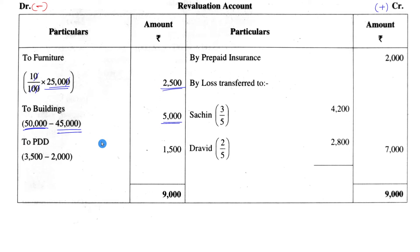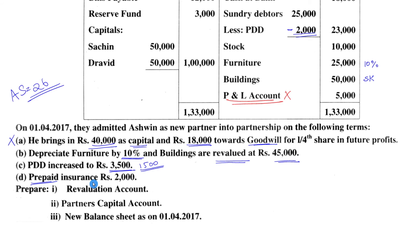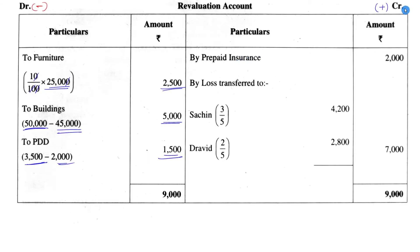Write on the debit side: 'To Provision for Doubtful Debts' — 1,500 rupees. Provision for doubtful debts is like a non-performing asset in banking terms — it's an amount the business cannot recover from debtors. To find the current year provision, subtract the previous amount from the increased amount: 3,500 minus 2,000 equals 1,500. Prepaid insurance of 2,000 is income, so write on the credit side: 'By Prepaid Insurance' — 2,000 rupees.